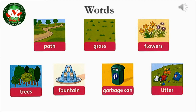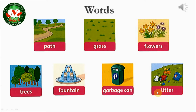Now let's read the 7 words again. Now you will listen to the foreign teacher say the words. Let's listen and point, then listen and repeat. Listening 89 — listen and point. Path. Grass. Flowers. Garbage can. Trees. Fountain. Litter. Flowers. Garbage can. Grass. Litter. Fountain. Trees. Path. Listen and repeat.